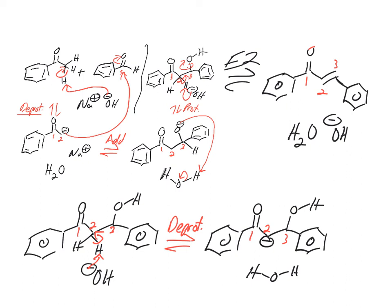So, then what happens? The E1CB part, E1CB. Elimination, unimolecular conjugate base. Well, this is a conjugate base of this starting acid. It's been deprotonated. This is the conjugate base.